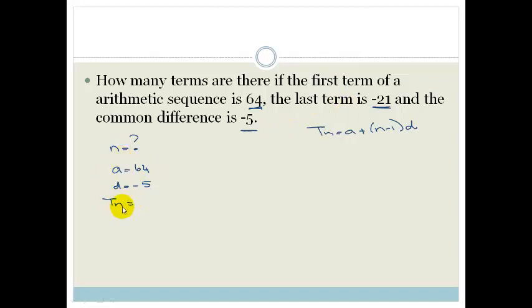But that is t to the n, because we want to know what is the nth term. We want to know how many terms there are. So we know that t to the n is minus 21. So now we can substitute these values into this equation. So we go minus 21 is equal to the first term, which is 64, plus n minus 1 times by minus 5. So the first thing that we can do is take the 64 and take it to the left-hand side. So we go minus 21 minus 64 is equal to minus 5.